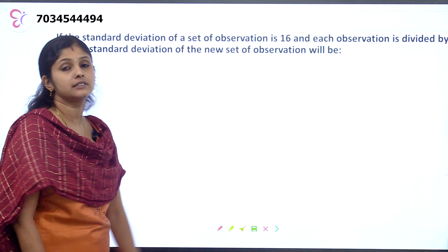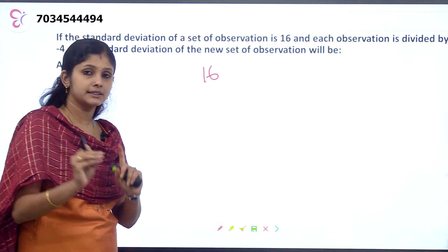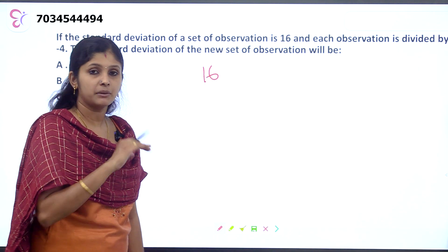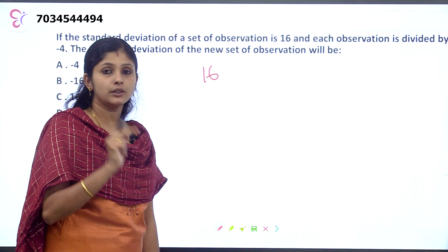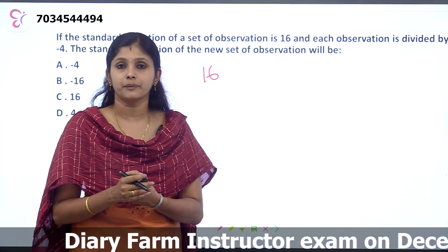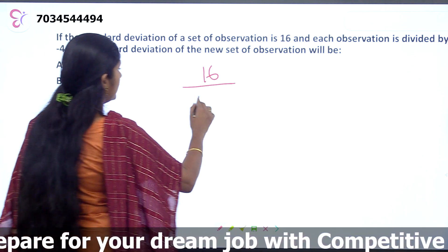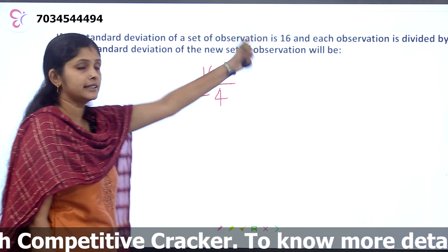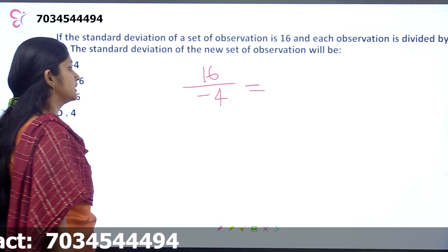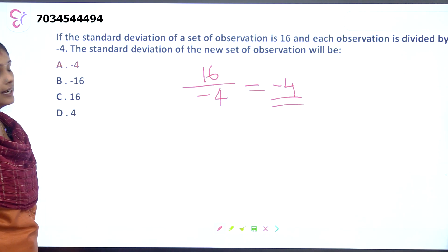The standard deviation is 14. When each observation is divided by the same number, the standard deviation is also divided by that number. So we divide 14 by minus 4. The answer is minus 4 — wait, we divide the standard deviation by minus 4 as well. Simple concept.